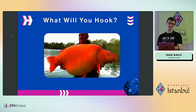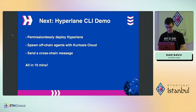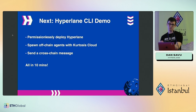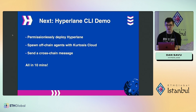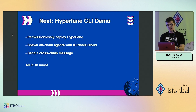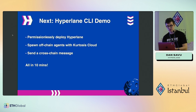One of the main bounties in this hackathon is to build on hooks. So my question to you is: what will you hook? That was the first part of the workshop on modular security. The second part is permissionless interoperability — the ability to deploy Hyperlane everywhere. We'll cover permissionlessly deploying Hyperlane with our new CLI.